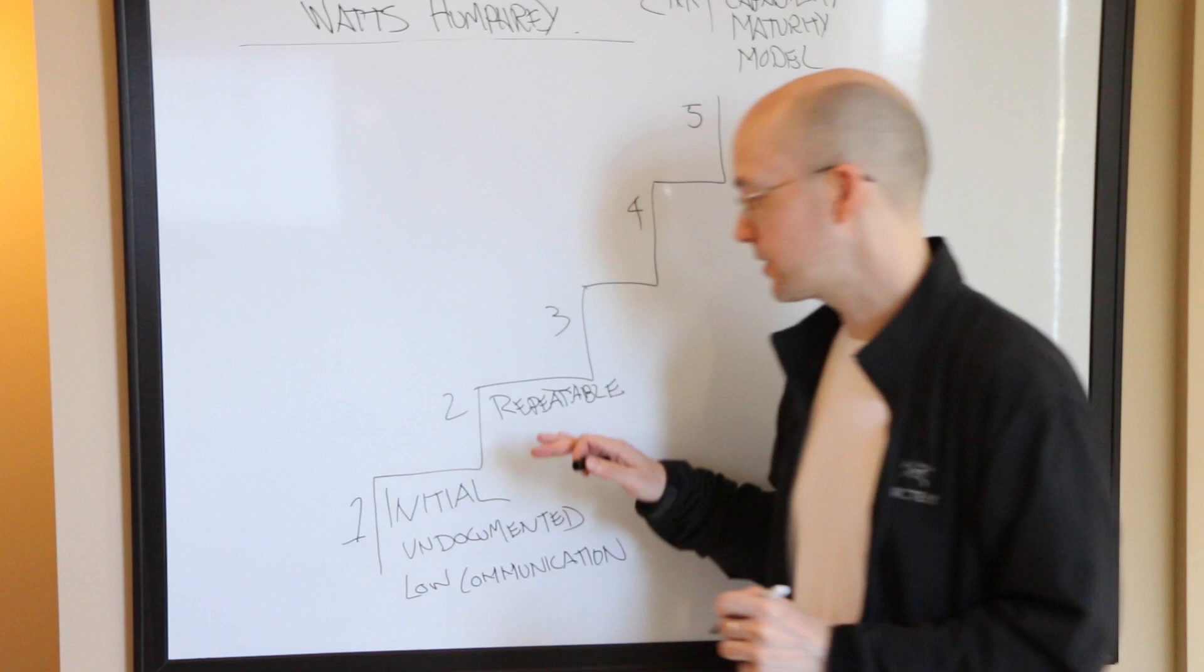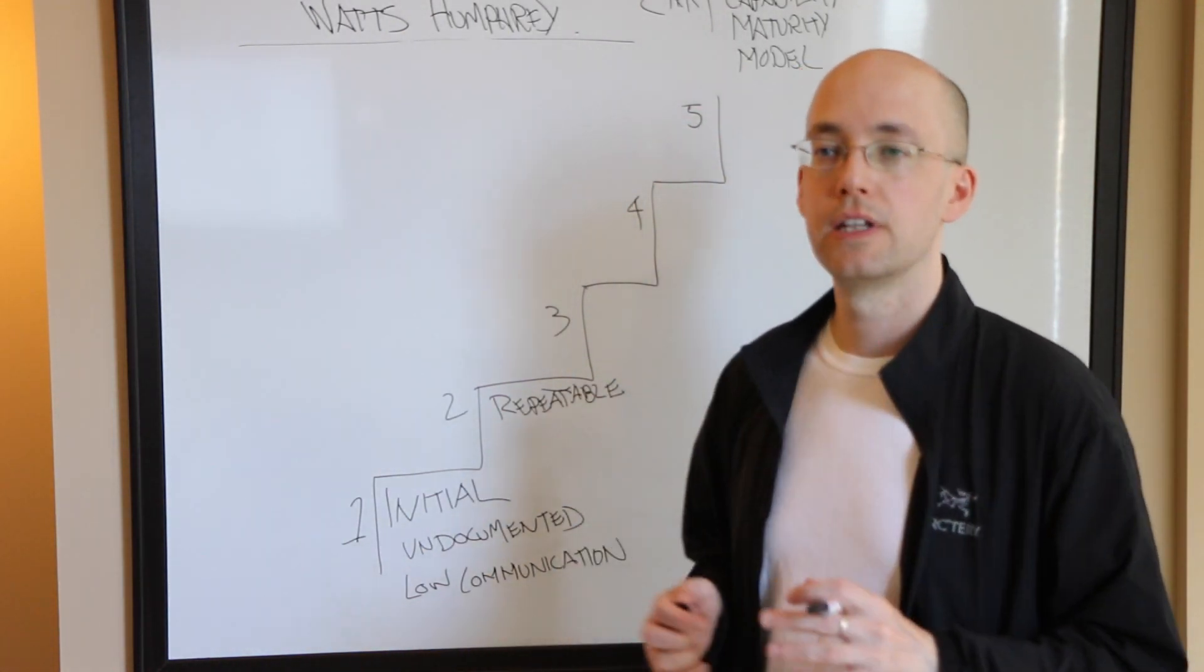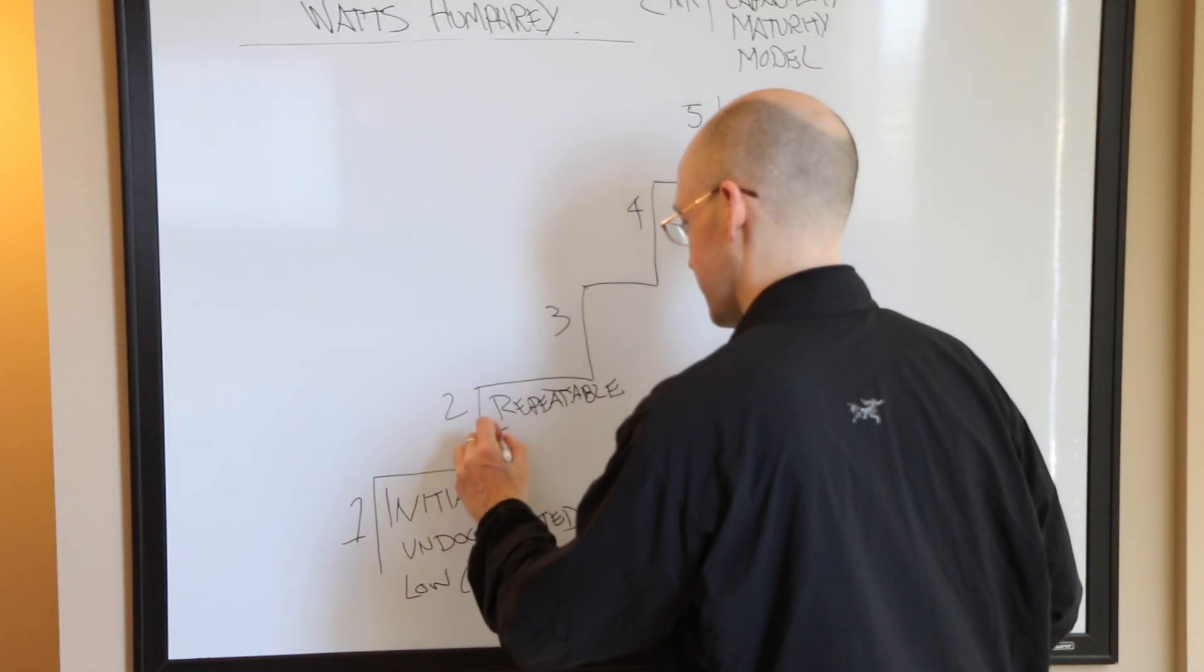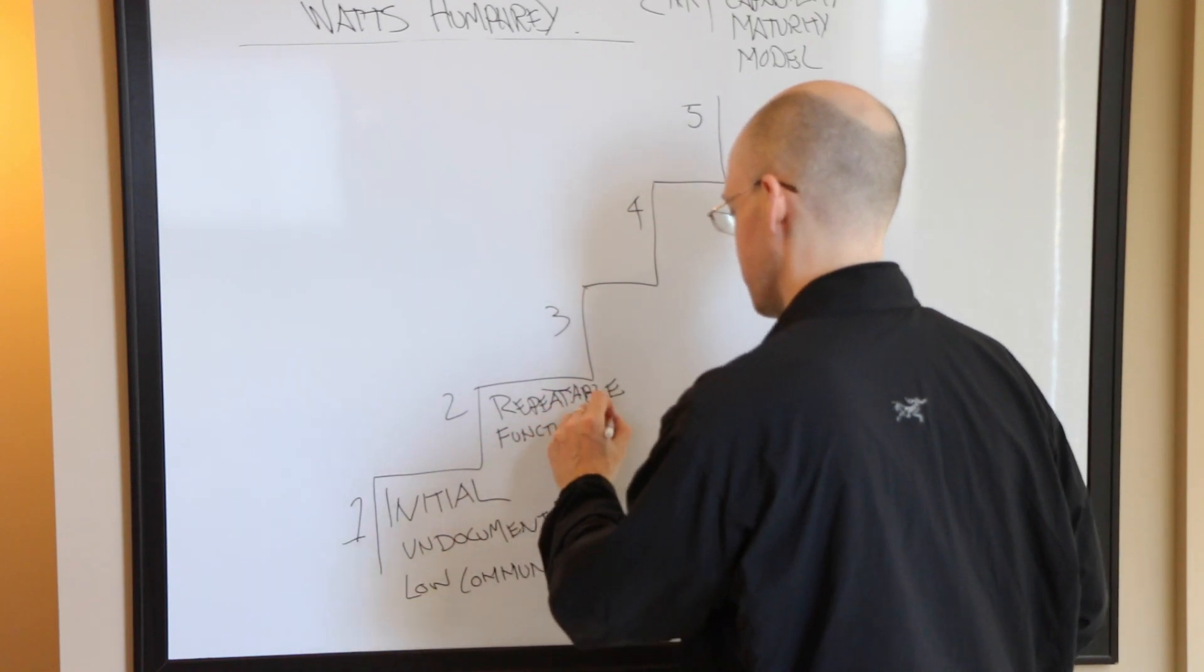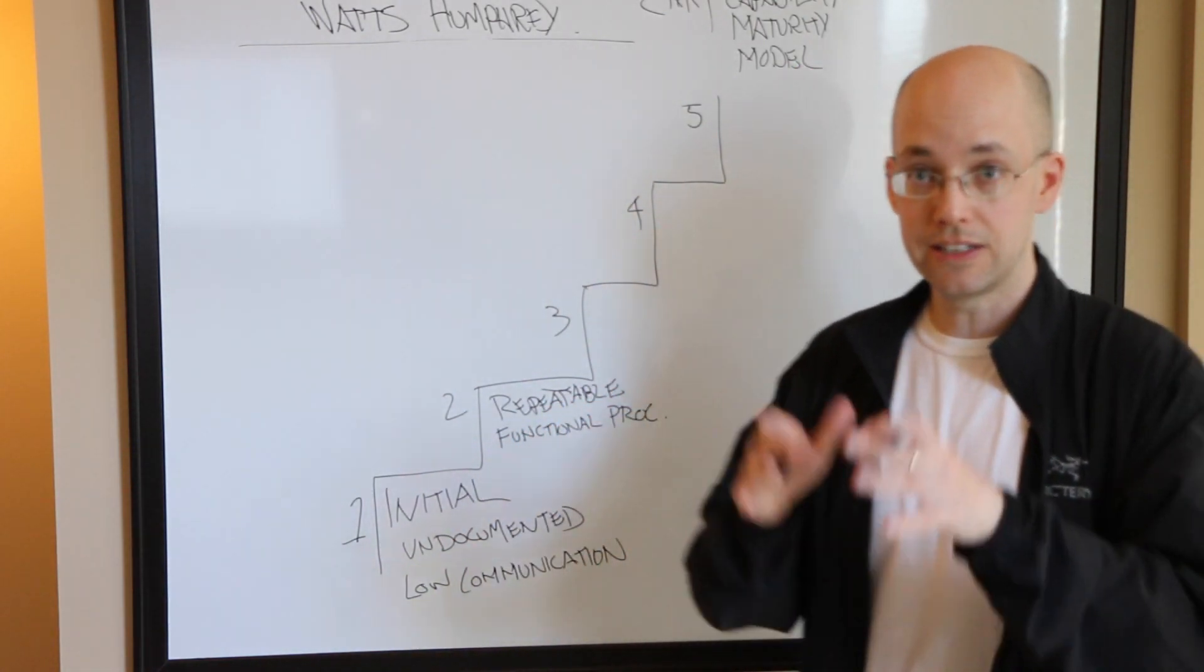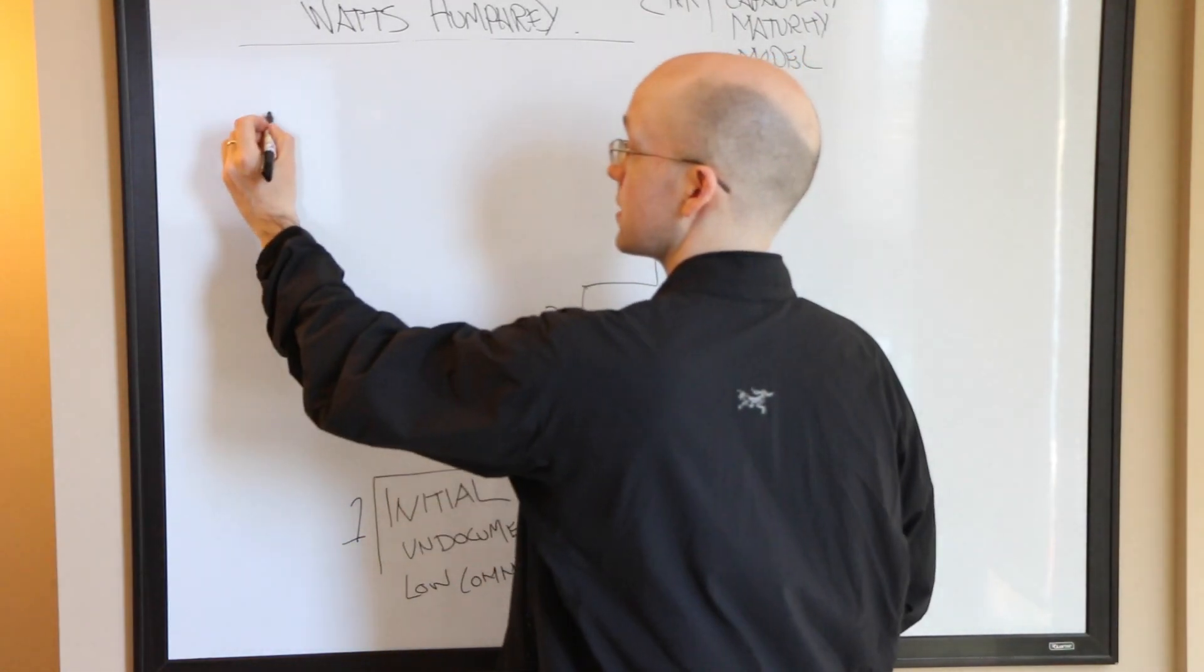That's an example of initial. Then we move into repeatable, Level 2. A characteristic of a business or organization in repeatable is there may be some processes, so we say functional processes are in place in the functional area.